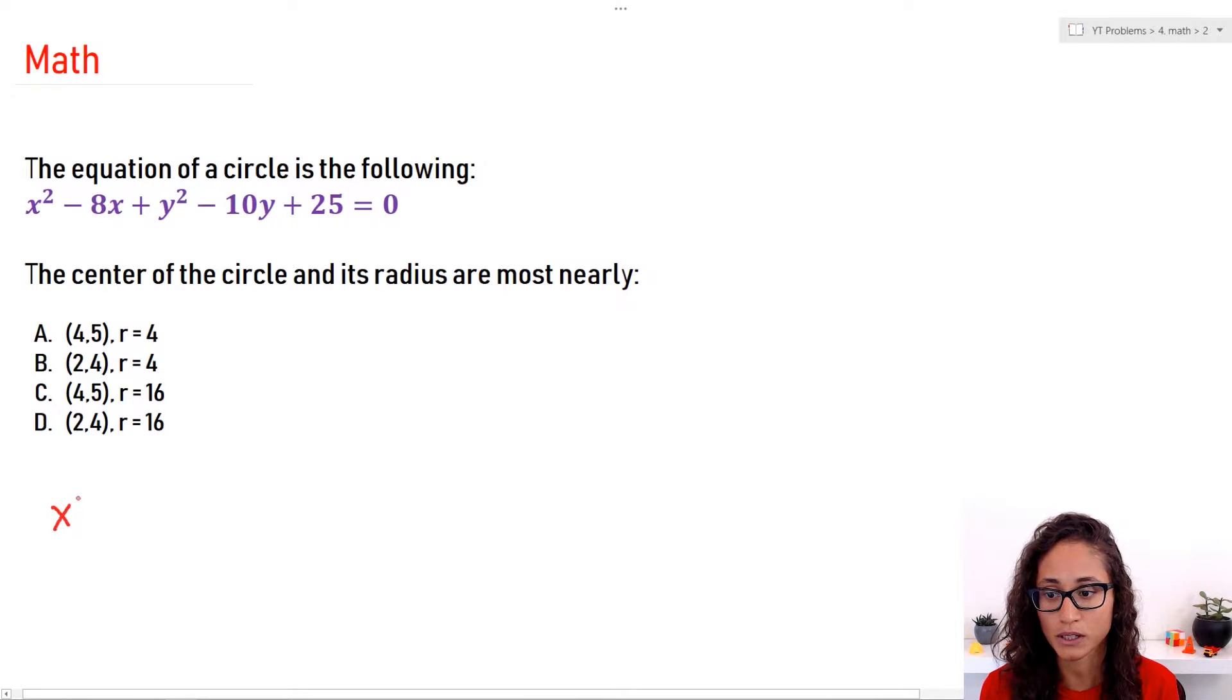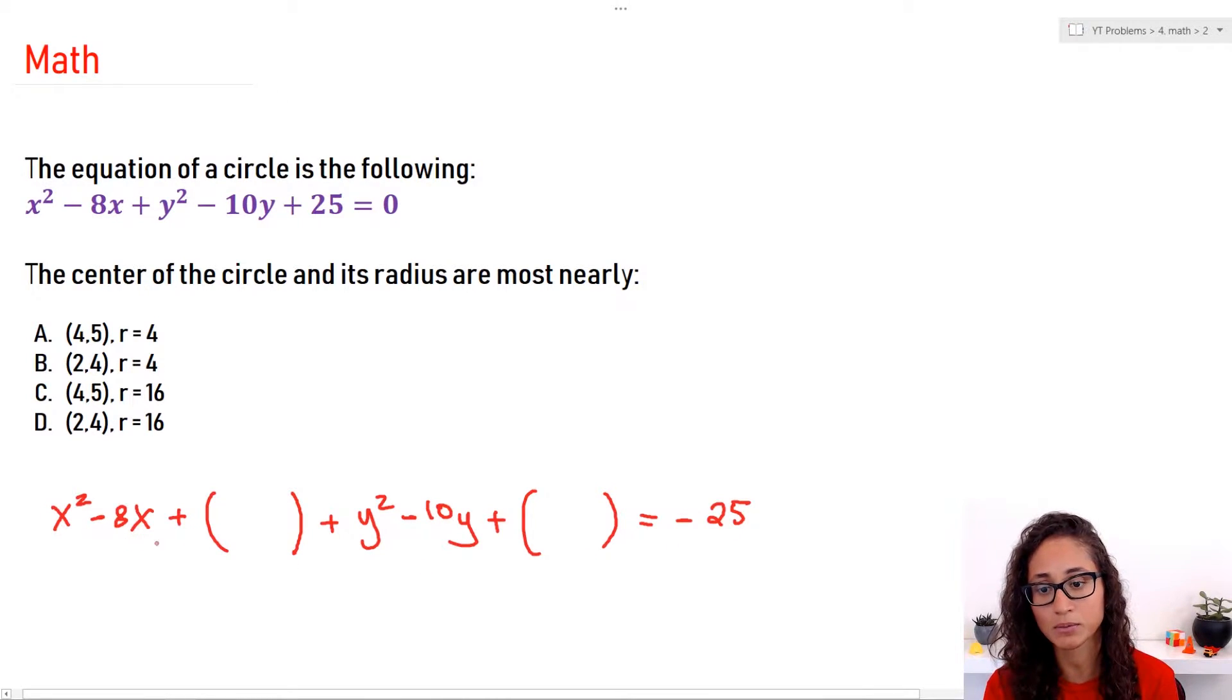First thing we're going to do is write x squared minus 8x and we're going to do plus and leave this empty for now because that's how we're going to complete the square. And then I'm going to write plus y squared minus 10y and I'm going to do plus and leave this alone for now. I'm going to take this 25 to the other side, this becomes minus 25. So I arranged the x components by themselves, y components by themselves and then any other numbers should go to the other side.